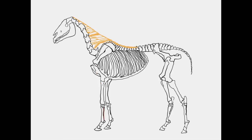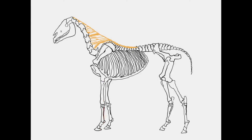The common digital extensor muscle, the lateral digital extensor muscle, the extensor carpi ulnaris muscle, the extensor carpi obliquus muscle, the flexor carpi radialis muscle, the superficial digital flexor muscle, deep digital flexor muscle, and the flexor carpi ulnaris muscle.